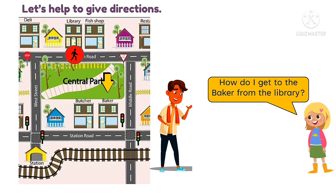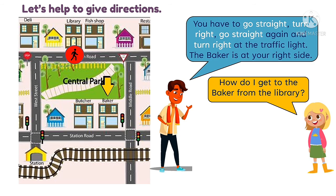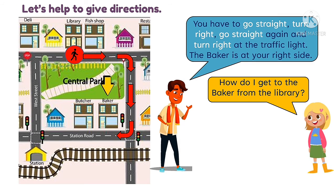How do I get to the baker from the library? You have to turn left, you have to go straight, you have to go straight, turn right, go straight again, and turn right at the traffic light. The baker is at your right side.